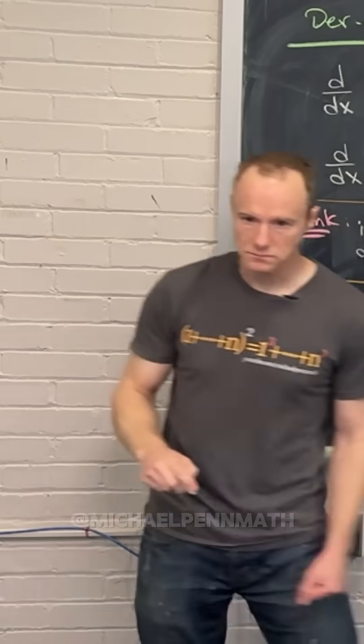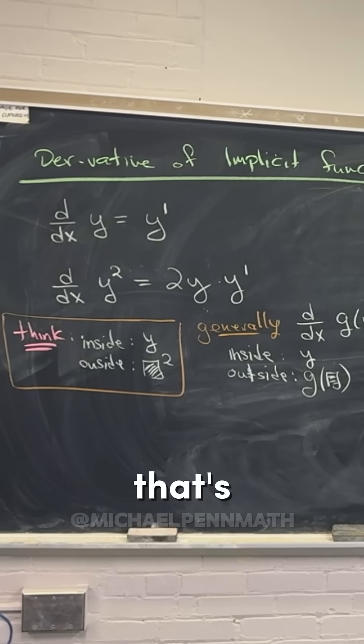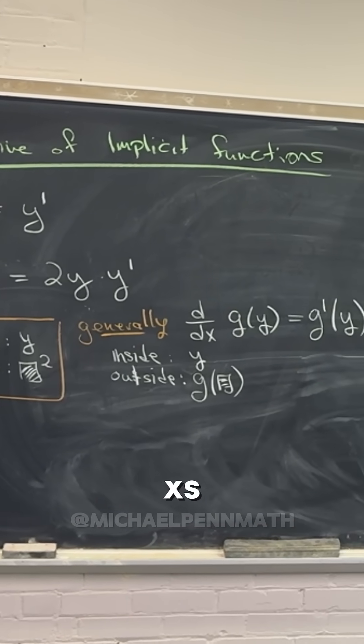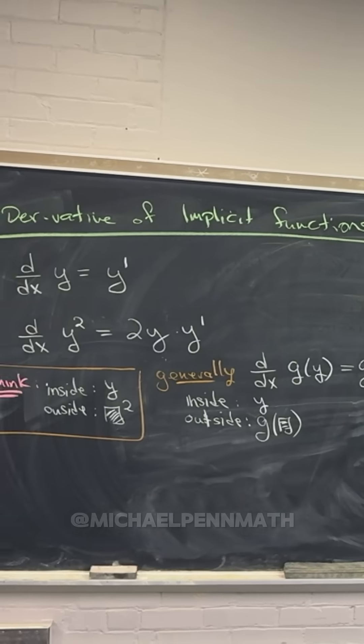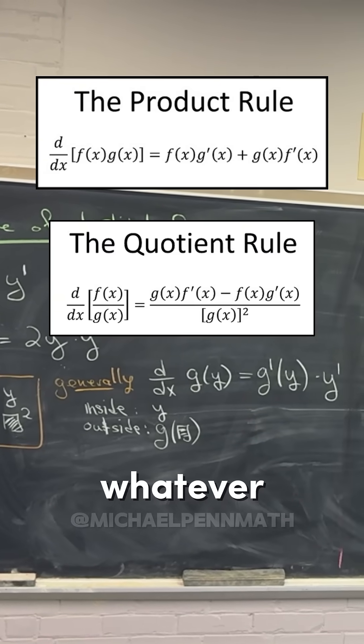Okay, so you've got something like that. And then, well, you might say that's not exactly what we have over there, because there we've got a combination of x's and y's and stuff like that. But you really just extend to that case by using the product rule, the quotient rule, whatever you need to.